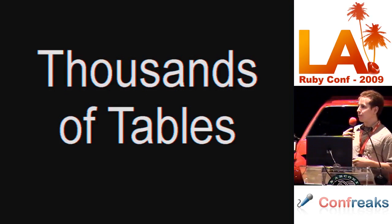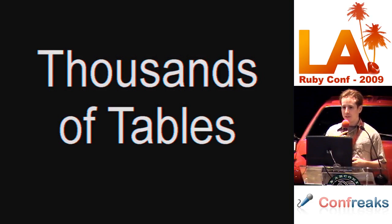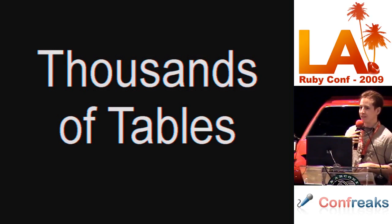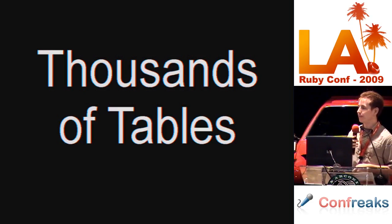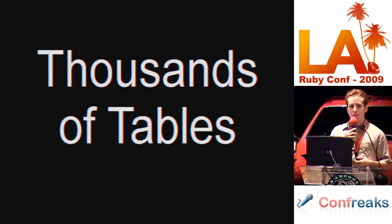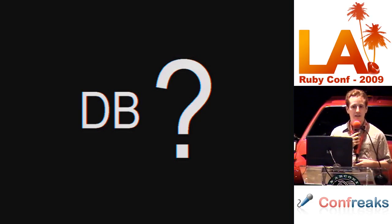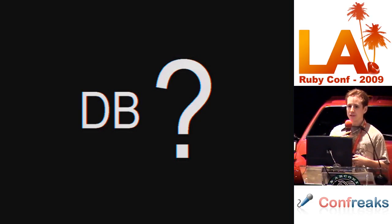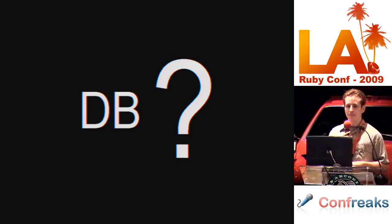Someone on the Sequel mailing list had a database with thousands of tables with the same schema. Using ActiveRecord, they had to use metaprogramming to create thousands of model classes, one for each table. With Sequel, they could access the tables directly, which made their work a lot easier. The convention when using Sequel with a single database is to store that database object in a constant named DB. The database object is mainly used to create datasets, which are also used to handle transactions and SQL logs.